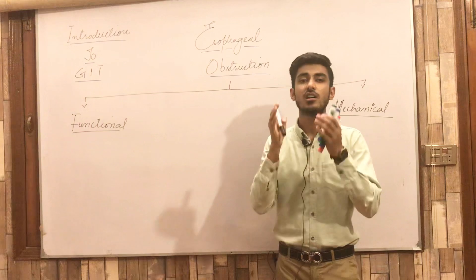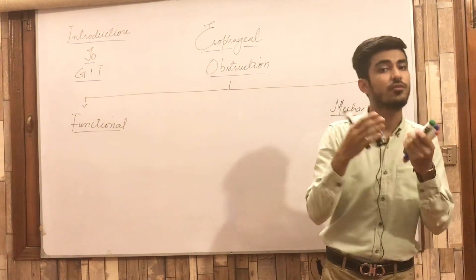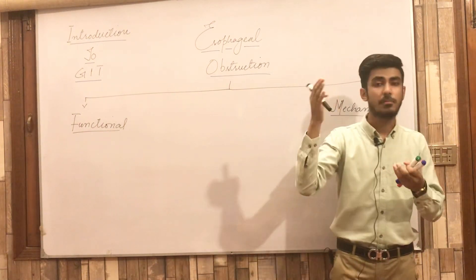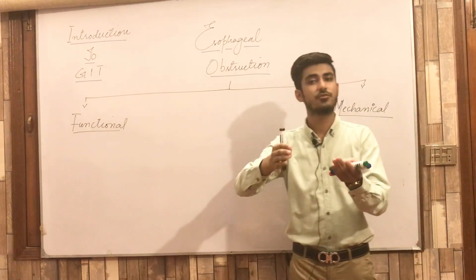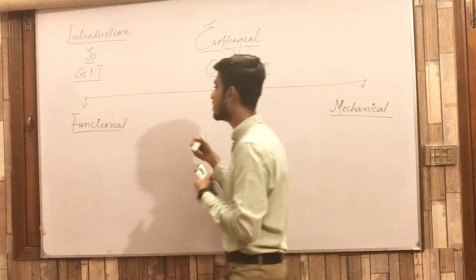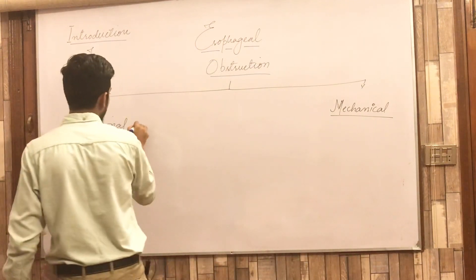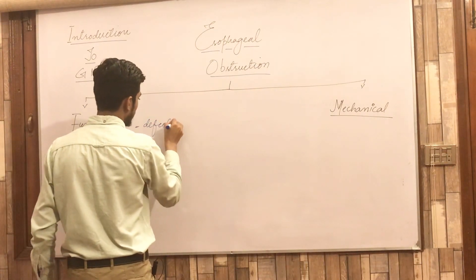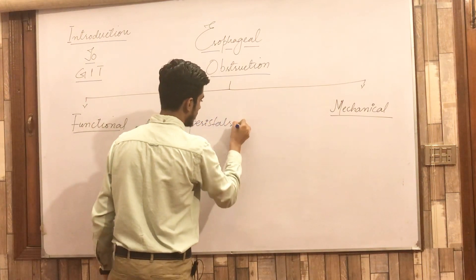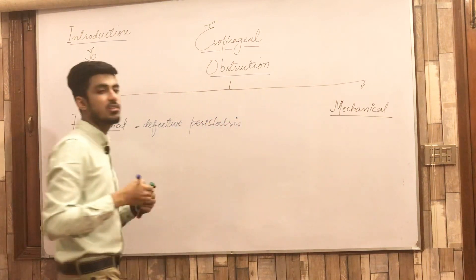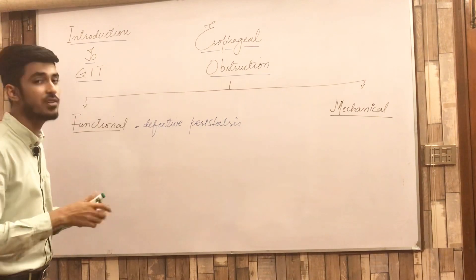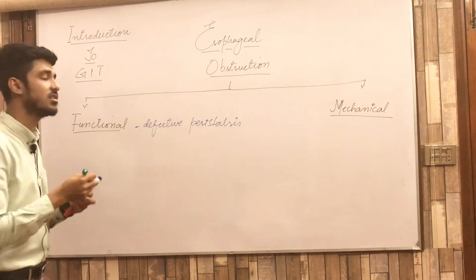Functional, as its name indicates, means there is a defect in the function of the esophagus. The function of the esophagus is peristaltic movement to propel food from the mouth to the stomach, so functional defect means defective peristalsis. This functional esophageal obstruction has three principal forms which we will discuss one by one.